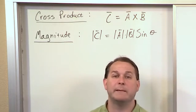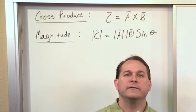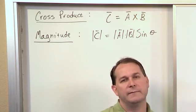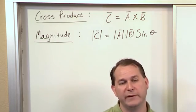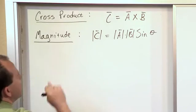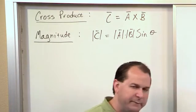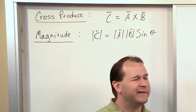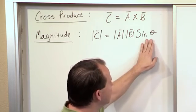This is a direct comparison to what we did in the dot product. Remember in the dot product, we said the magnitude of A dot B is magnitude of A times magnitude of B times the cosine of the angle between them. And this is real similar: magnitude of A times magnitude of B times the sine of the angle between them.